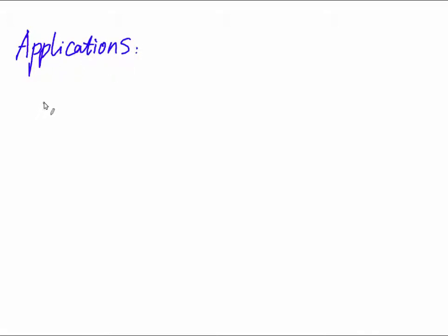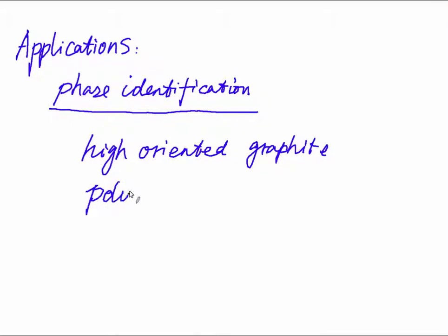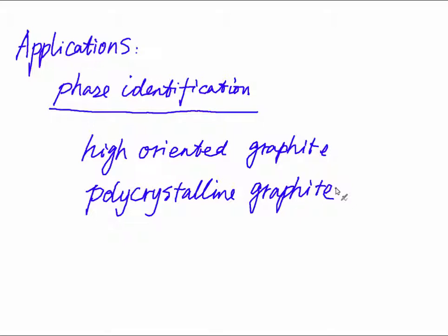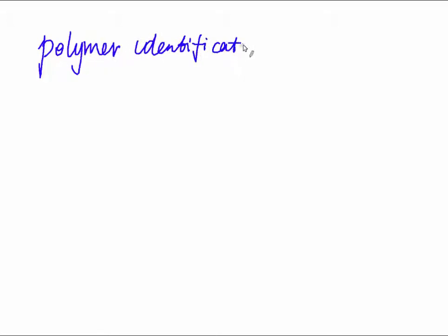The application of Raman spectroscopy can be phase identification for polymorphic solids. For example, we can identify highly oriented graphite and polycrystalline graphite by comparing the position of the Raman band. This band corresponds to highly oriented graphite, while polycrystalline graphite appears at a different position, allowing you to identify which is which.